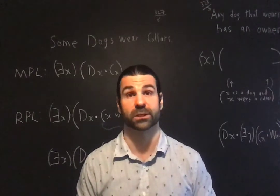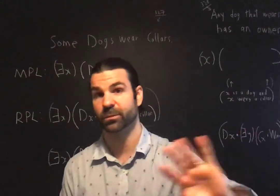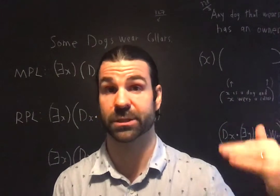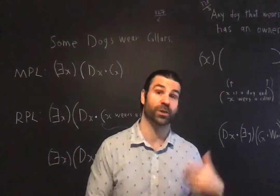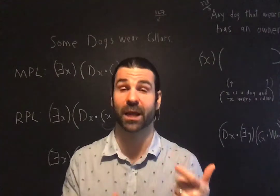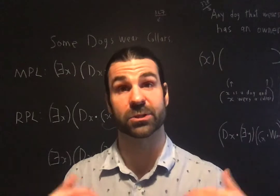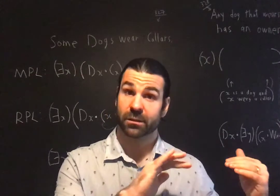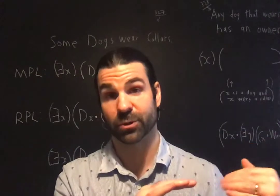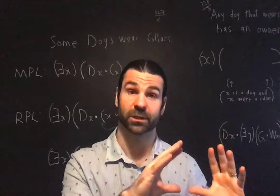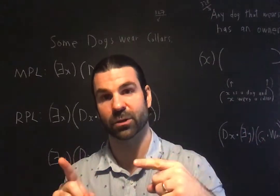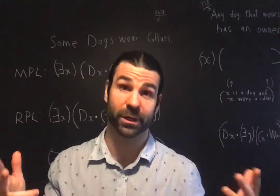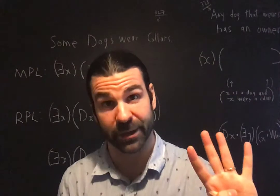Remember what a categorical sentence is from Unit 12. A categorical sentence is one where the subject and predicate are both classes, and it asserts an inclusion or exclusion relation between those two classes. We distinguished universal or complete inclusion versus particular inclusion.